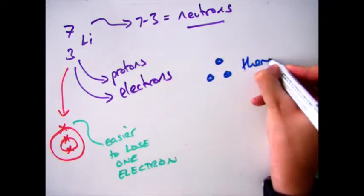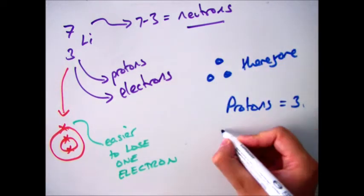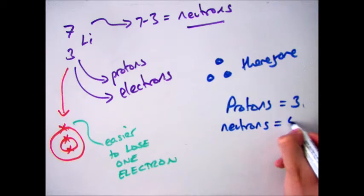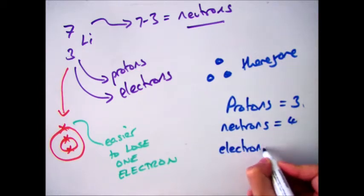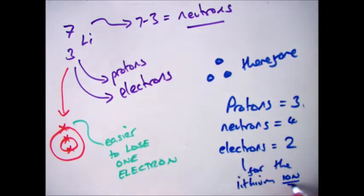Which results in, for a lithium ion, having 3 protons, 4 neutrons and 2 electrons. Remembering that's for the ion, not for the atom.